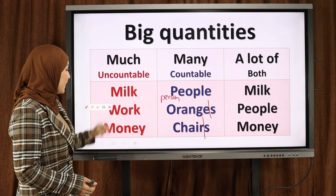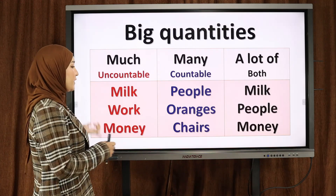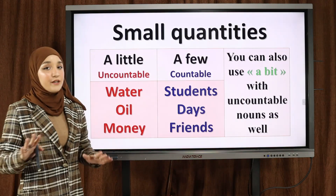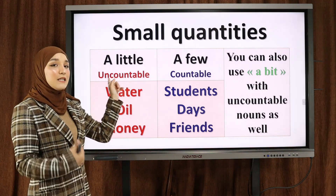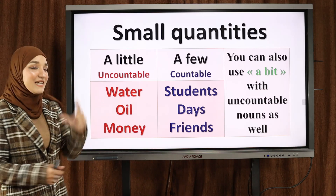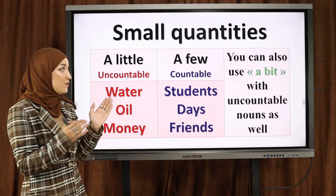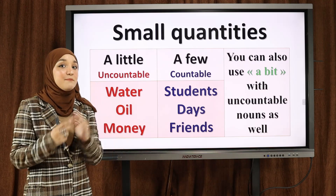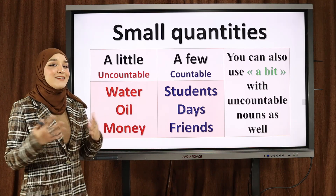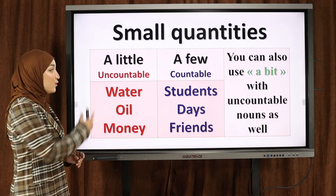These are three quantifiers used to talk about big quantities — هذه هي الثلاث كلمات لتحديد الكميات الكبيرة. Now let's talk about small quantities — كيف نتحدث عن الكميات الصغيرة. We have two quantifiers: a little and a few. Both of them mean a small quantity — عندما يكون لدينا كم صغير من شيء. A little is used with uncountable nouns — نستعمل a little مع الأشياء الغير قابلة للعد.